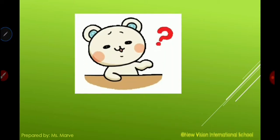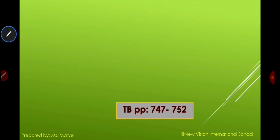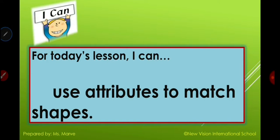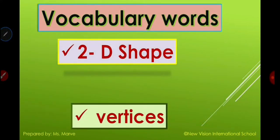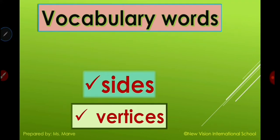Now we are going to move to our new lesson. What do you think our next lesson is? Our lesson is all about using attributes to define two-dimensional or 2D shapes. You can also open your book on page 747 and we will end on page 752. Our objective for today's lesson: I can use attributes to match shapes. Here are some vocabulary words we need to remember: 2D shape — say it, 2D shape. Next we have sides — say sides. Next, vertices — say it, vertices.